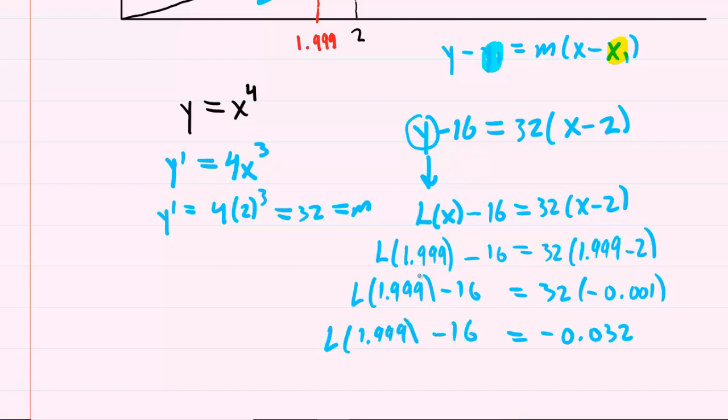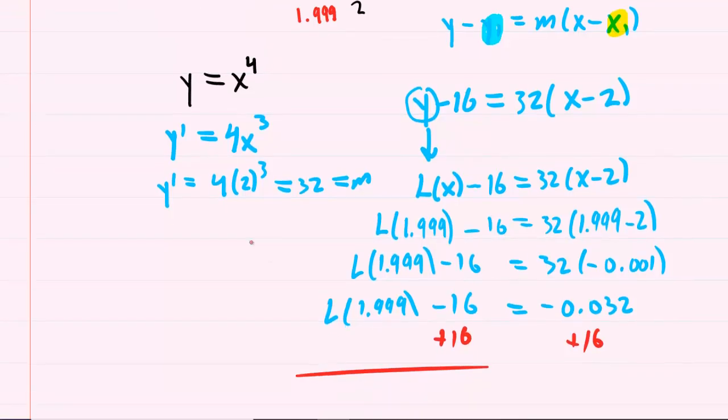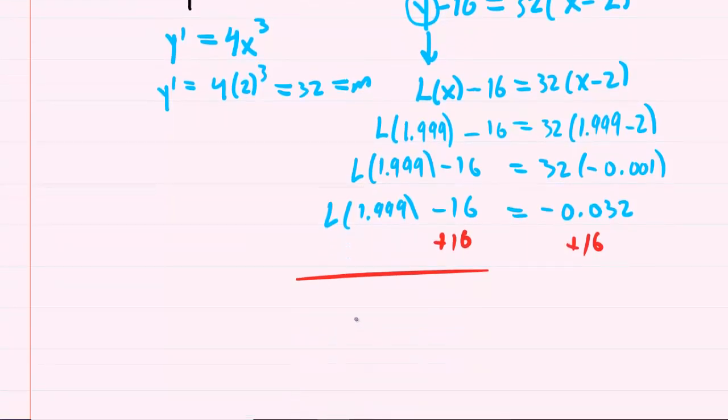Finally, to solve for the estimated y value, we're going to add 16 to both sides of this equation. And when we do that, we can see that L of 1.999 is equal to 15.968.